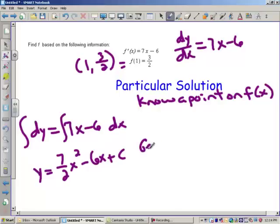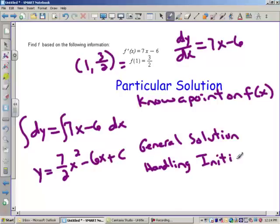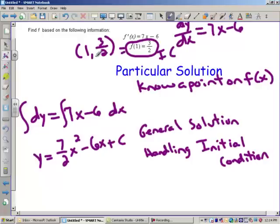That's how we're going to figure out this particular solution. So now that I have my general solution, I'm going to go find my particular solution. And that is by, this is what they'll say on the AP rubric, handling the initial condition. Now the initial condition simply means the original point that you were given. This is the IC. That's the initial condition. So we have to deal with that. The 1 is your x. The 3 halves is your y. So I'm going to put 3 halves for your y. And if we put a 1 in for these x's, that's 7 halves minus 6 plus c.